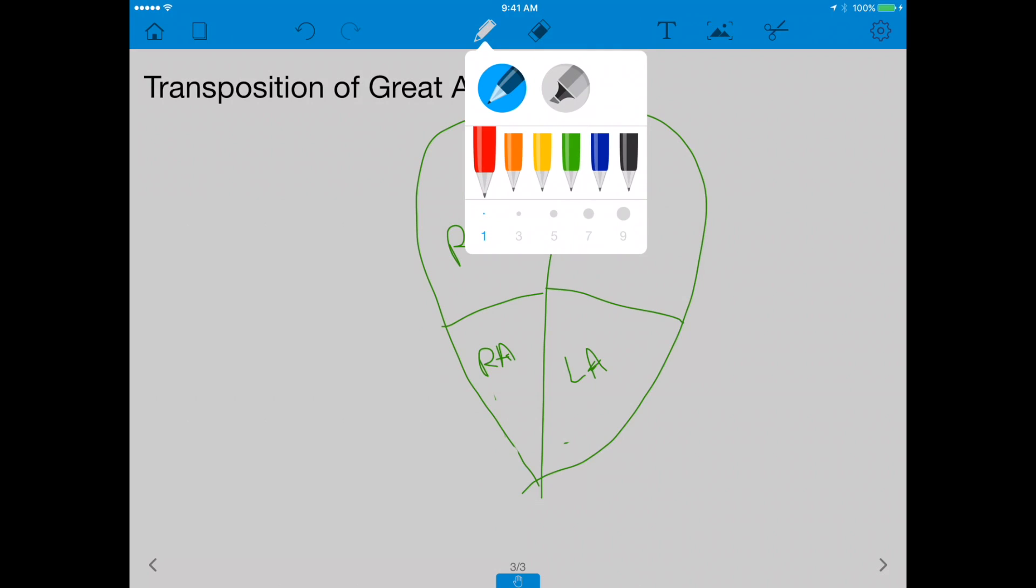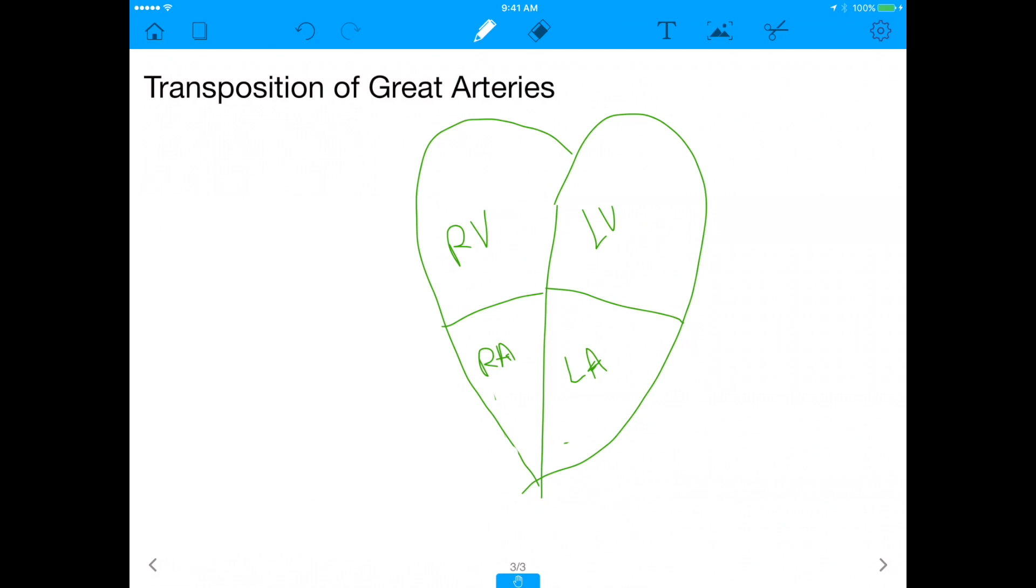But in the transposition of the great arteries, what's going on is that we actually have the aorta coming out of the right ventricle and the pulmonary artery coming out of the left ventricle. So this is going to change things. Because remember, the blood going into the right atrium is always deoxygenated because it's coming from the body. But in this case, because we have the aorta right here, because the aorta is attached to the right ventricle, the aorta will inherently send the blood to the body. And that body will just bring it straight back to the right atrium. And so now you never get oxygenated blood going to the body.